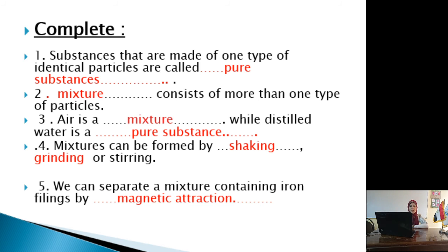Slide number 8 — Complete: Substances that are made of one type of identical particles are called pure substances. What consists of more than one type of particles? Mixtures. Number 3: Air is a mixture, while distilled water is a pure substance. Number 4: Mixtures can be formed by shaking, grinding, or stirring.